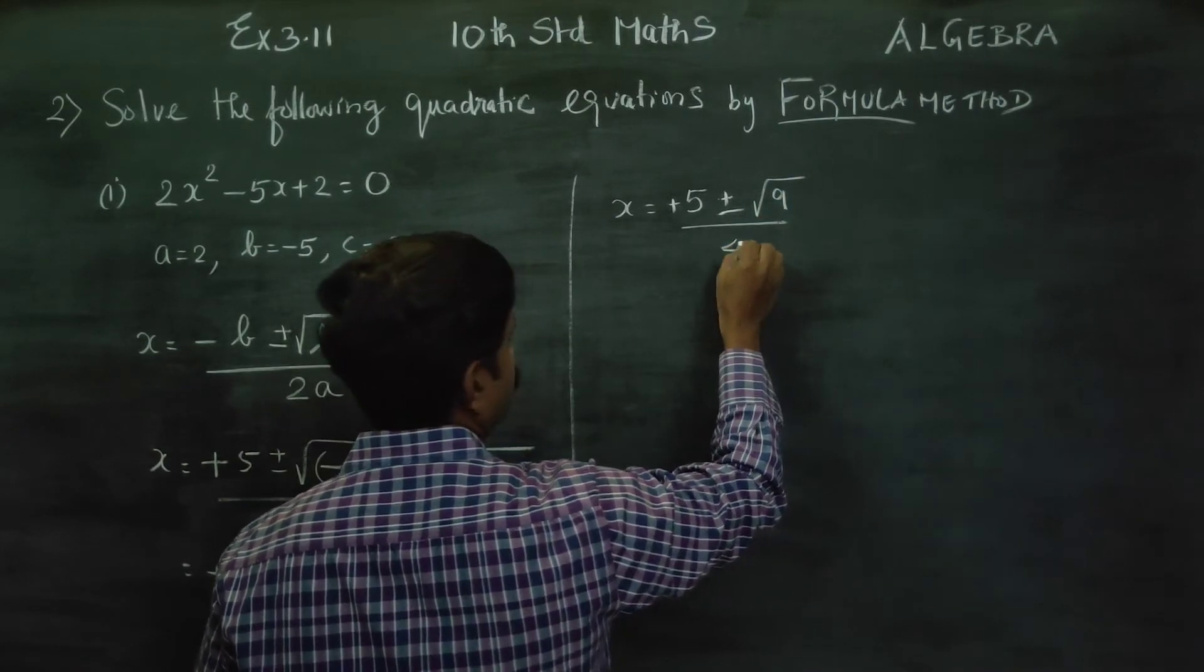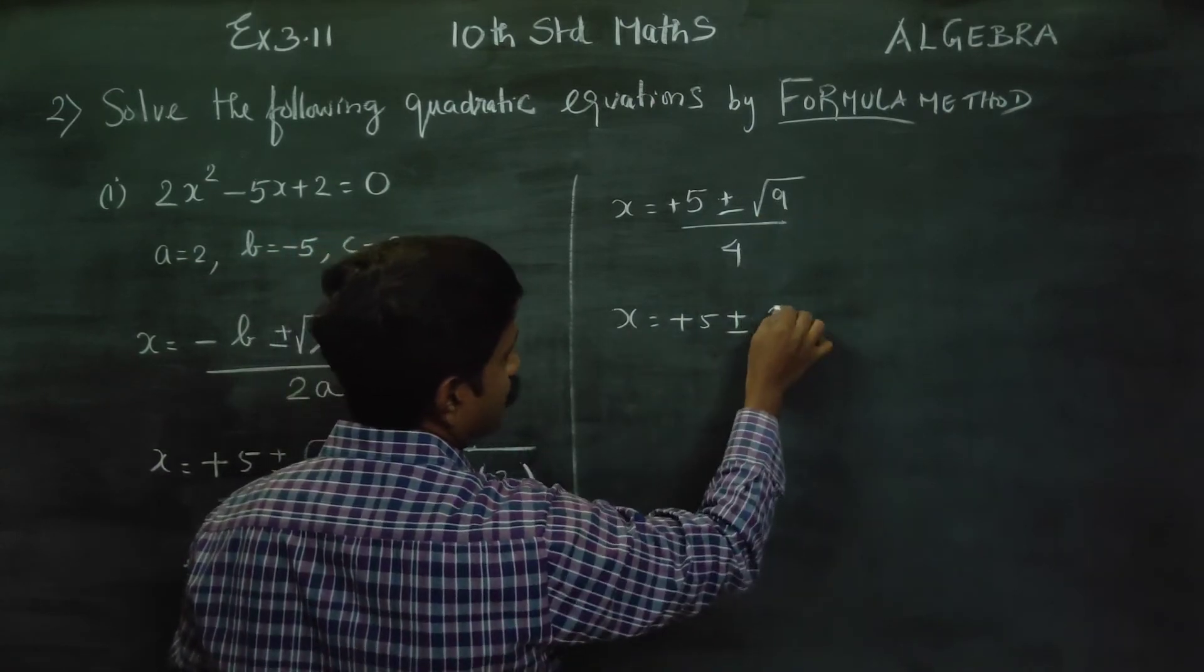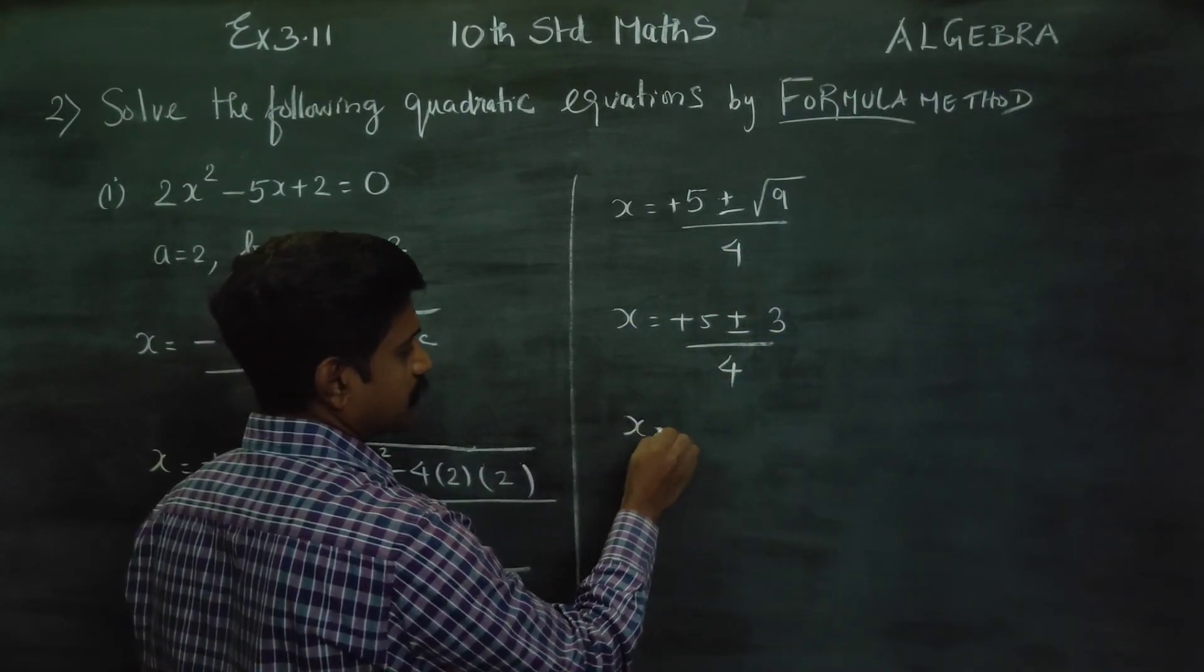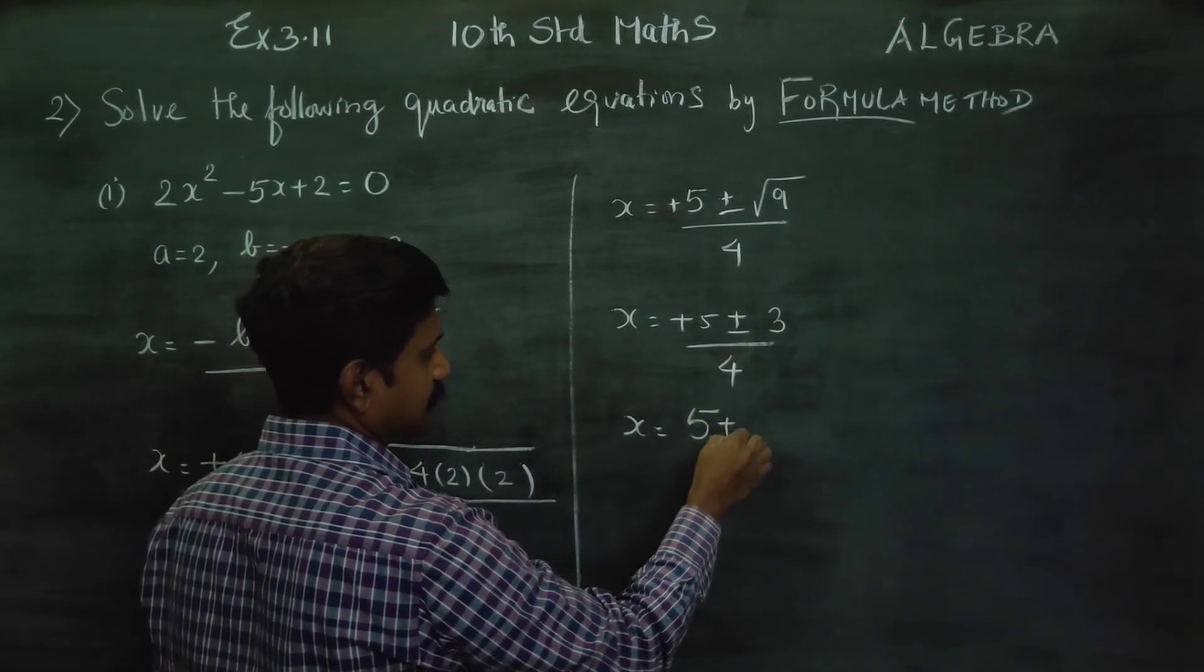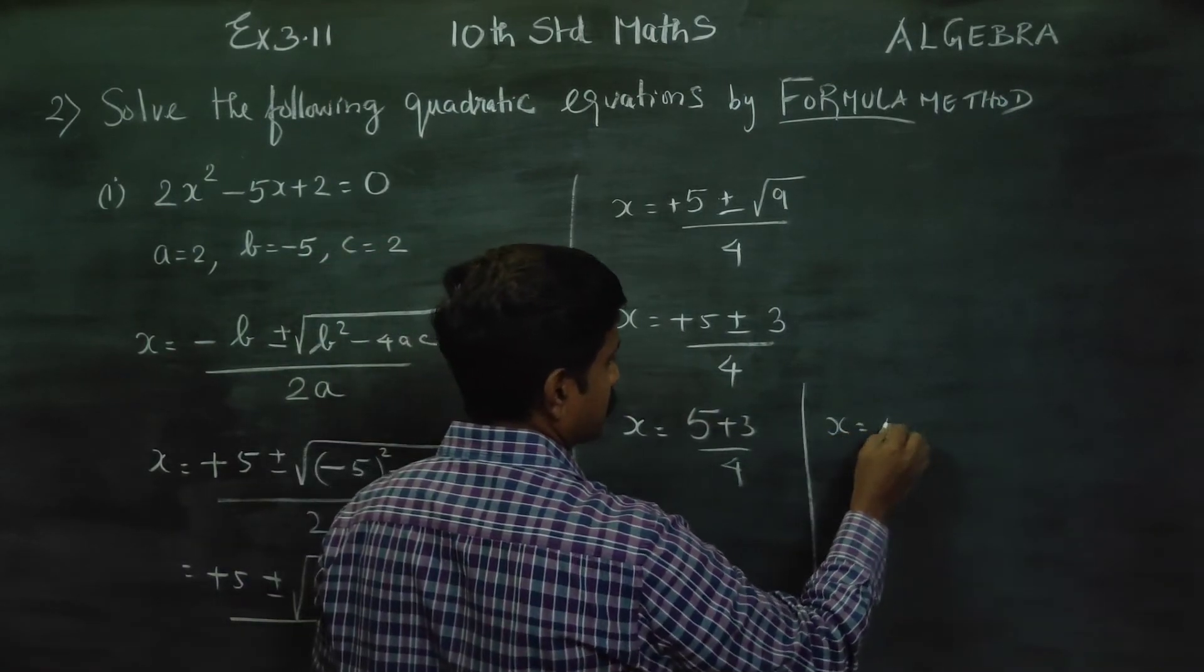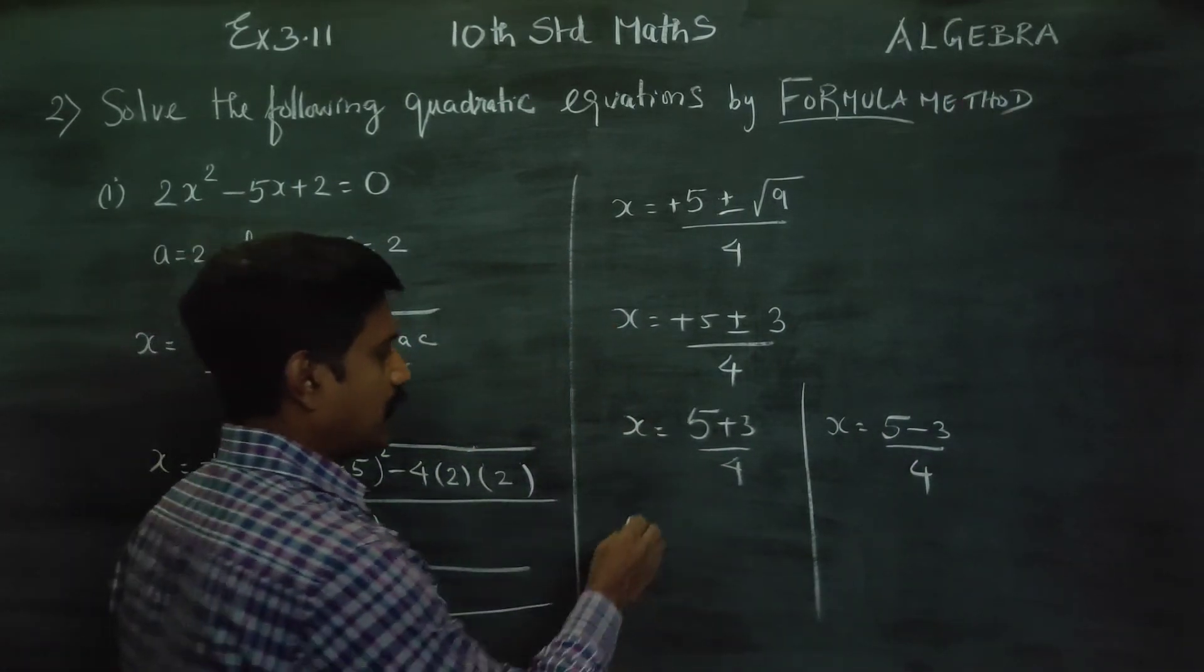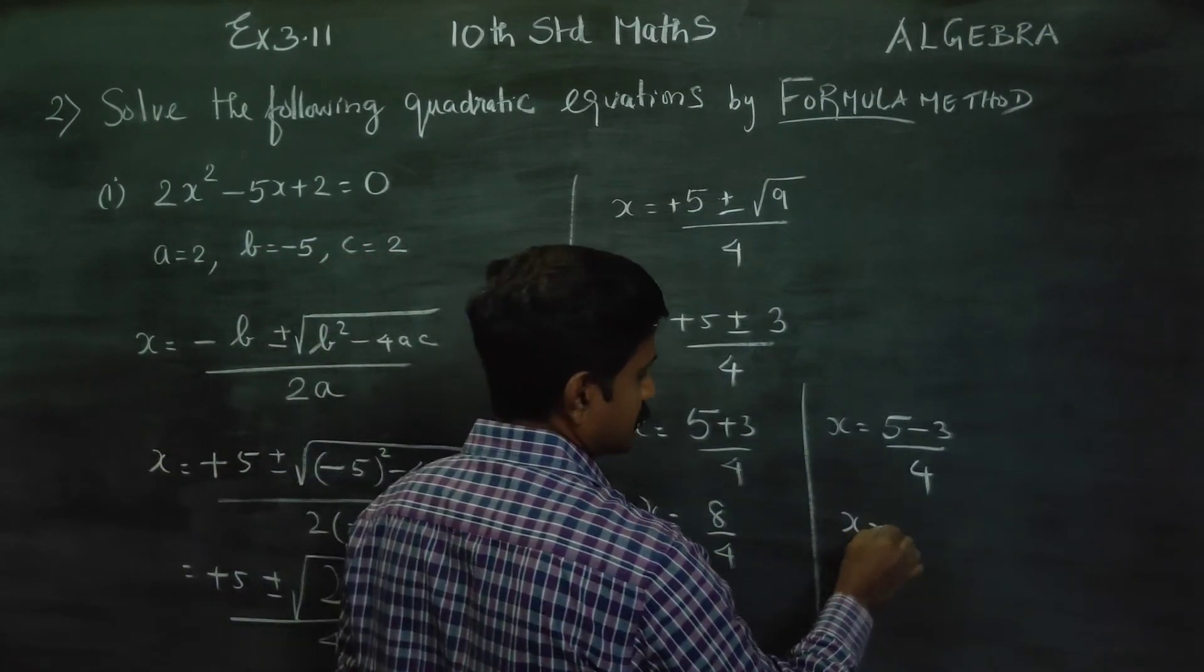x is equal to plus 5 plus or minus square root of 9, that's 3, by 4. That's why x is equal to 5 plus or minus 3 by 4. x is equal to 5 plus 3, that's 8, by 4.